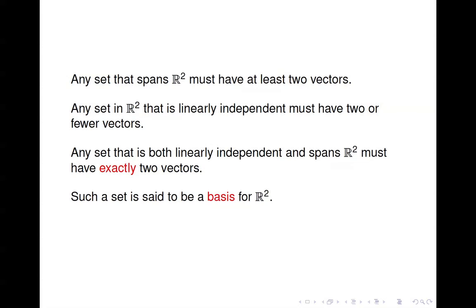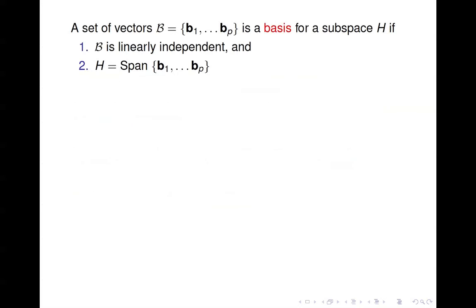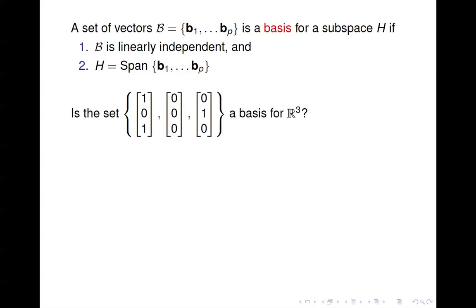A set that is both linearly independent and spans R2 is called a basis for R2. Formally, a set of vectors {b1, ..., bp} is a basis for a subspace H if the set is linearly independent and the span of the set is the subspace H. So you need two things: linear independence and spanning the subspace. Let's look at a few examples.